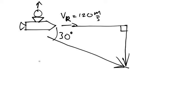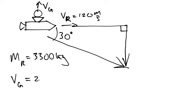What are we given? The mass of the rocket is originally 3,300 kilograms. The velocity of the gases, Vg, is 2,200 meters per second, and it wants to change direction by 30 degrees.